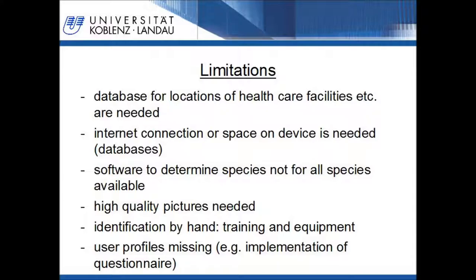Another limitation is that the software to determine insects is not available for all species. The software Drawwing was originally developed to determine different species of bees and is now being extended to other species, but not all species are implemented. For the automatic identification, high quality pictures with specific requirements for background and brightness are needed. The cameras in newer smartphones meet the necessary requirements, but it will take some time until such newer smartphones are common in developing countries.